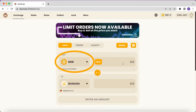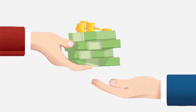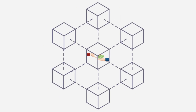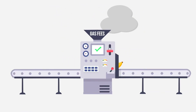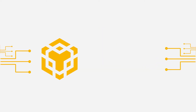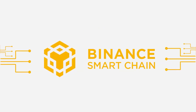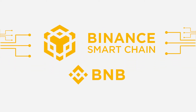Here you select the token you want to give, and then the token you want to receive. Remember that every transaction you make on the blockchain requires a gas fee to be paid in order to be executed. For example, in this case as we are on Binance Smart Chain, we need a small fraction of BNB to pay for this transaction.